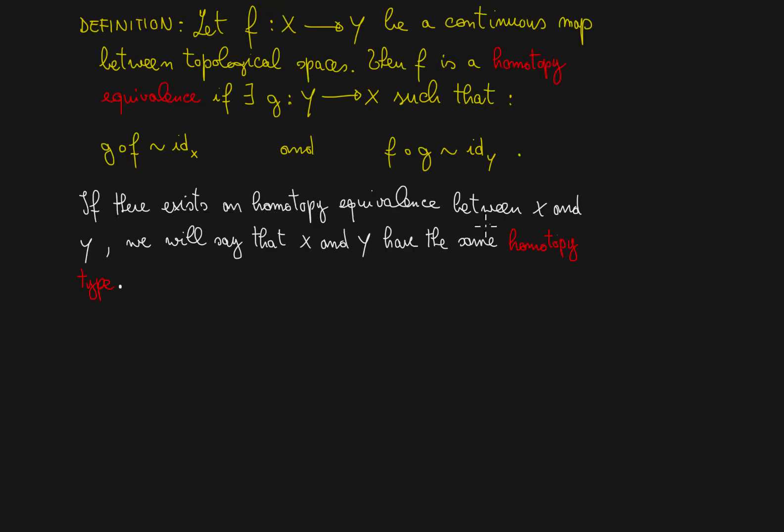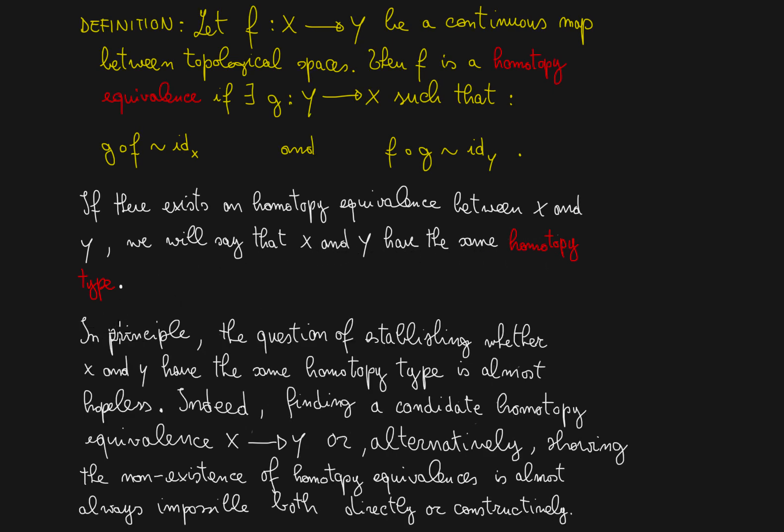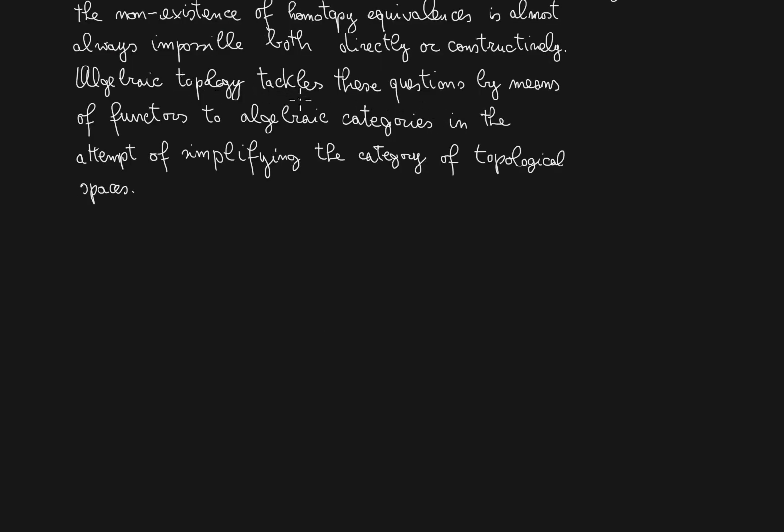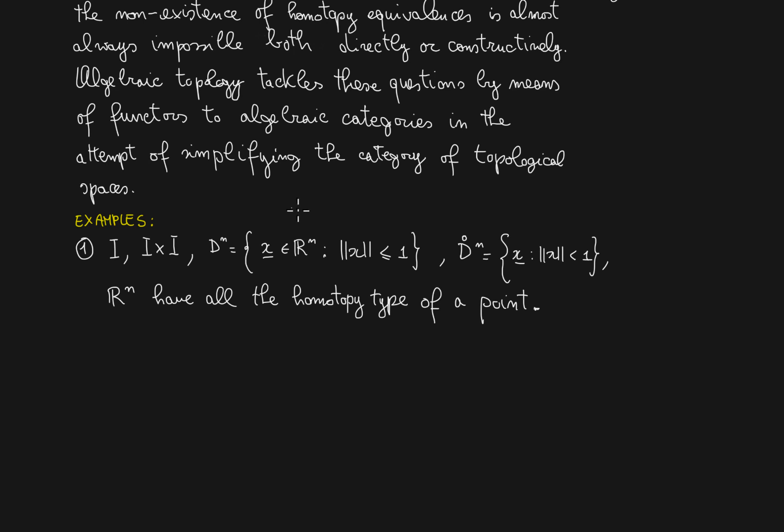If there exists a homotopic equivalence between x and y, we will say that x and y have the same homotopy type. In principle, the question of establishing whether x and y have the same homotopy type is almost hopeless. Indeed, finding a candidate homotopy equivalence or alternatively showing the non-existence of homotopy equivalences is almost always impossible. Algebraic topology tackles these questions by means of functors to algebraic categories in the attempt of simplifying the category of topological spaces.